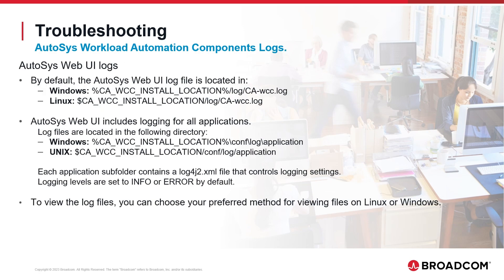Autosys Web UI logs. By default, the Autosys Web UI log file is in specific directories on Linux and Windows. Autosys Web UI includes logging for all its applications, with log files in a designated directory on Windows and Linux. Each application subfolder contains a log4j2.xml file that controls logging settings. Logging levels are set to info or error by default. You can choose your preferred method for viewing the log files.